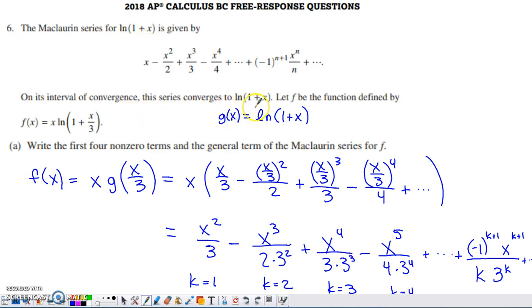They tell us that series converges to that function, and then they say f of x is the function defined right here, x natural log of 1 plus x over 3. Part A asks us for the first four non-zero terms as well as the general term for the Maclaurin series for f.